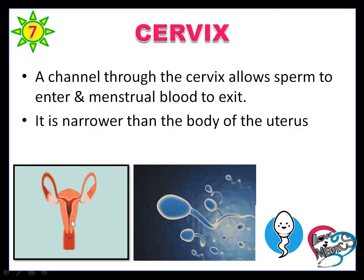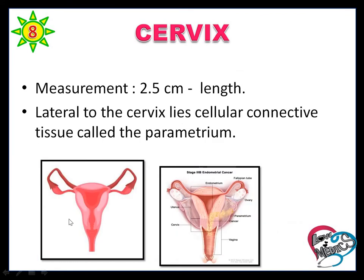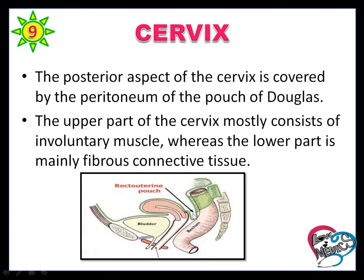The cervix is the channel that allows sperm to enter and menstrual blood to exit. It is narrower than the body of the uterus. Measurement of the cervix is 2.5 cm in length. Cellular connective tissue is present lateral to the cervix, called parametrium. A pouch is present for the posterior aspect of the cervix, covered by peritoneum — that is called the pouch of Douglas. The upper part of the cervix is involuntary muscle, whereas the lower part is fibrous connective tissue.